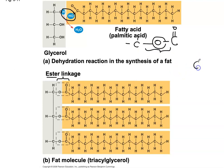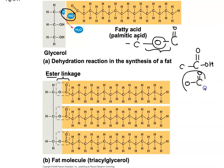Make sure you know the difference: carboxylic acid has the COOH group, whereas an ester has a C double bond O with an oxygen connecting to another group. The process of forming this ester linkage is called esterification, and the dehydration process can also be called esterification.